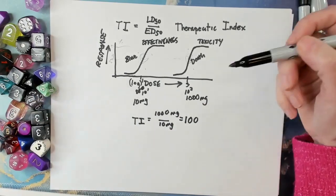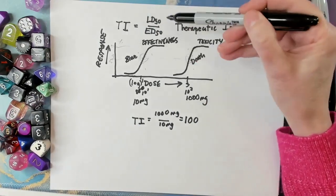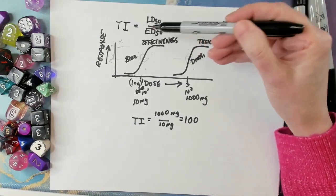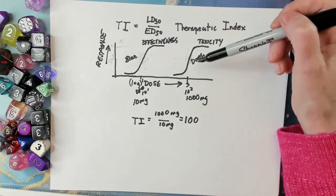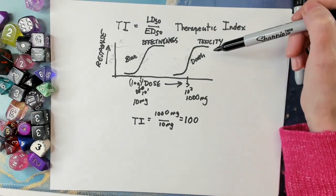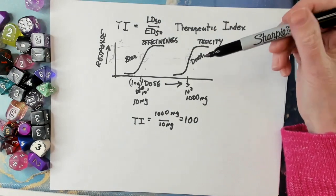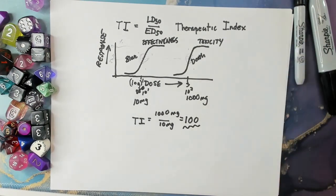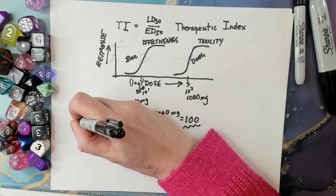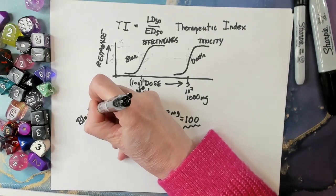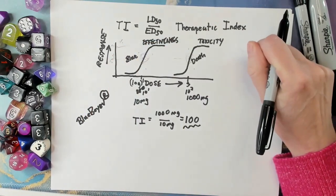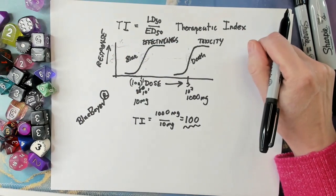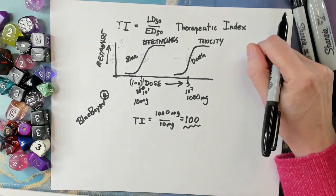So what does this really tell us clinically? Nobody's ever going to ask you what this number is, and it's generally an estimate anyway because you can't do experiments where you kill 100% of your subjects. What this is telling you is that the dose that causes death or toxicity is about 100 times the effective dose. So say the recommended daily dose for Blue Boyev — a drug I just made up — is 10 milligrams. How poisonous is this drug?